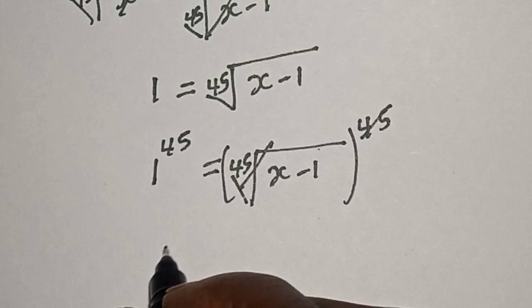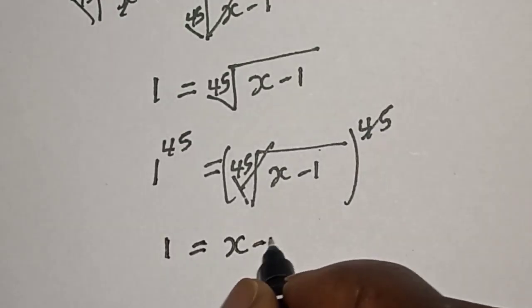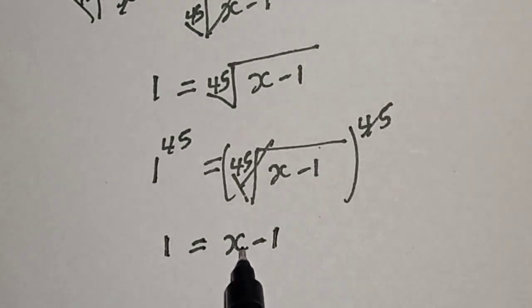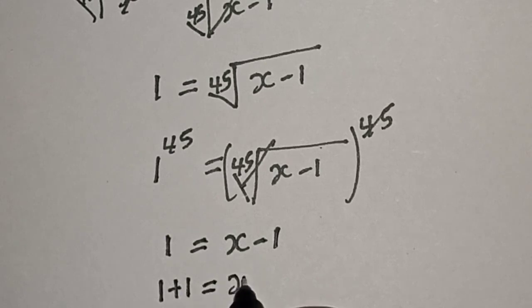Then 1 raised to the power of 45 is 1. This is equal to x minus 1. Then we have 1 plus 1 is equal to x.